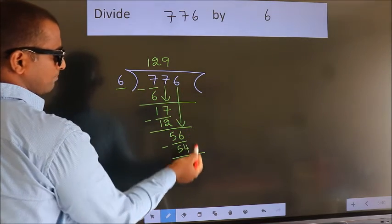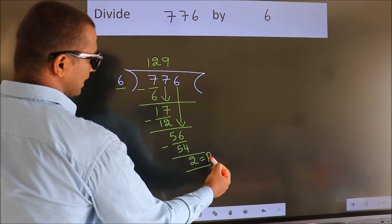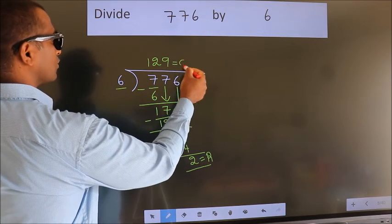No more numbers to bring it down. So we stop here. This is our remainder. This is our quotient.